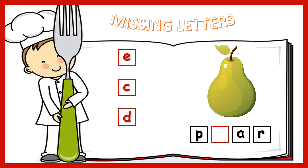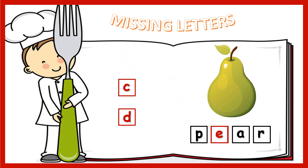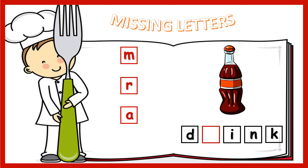It's a pear. Fill in the square, please. We have P, E, A, R. The missing letter is E. Good job! The next one is 'drink.' Which is the correct letter — M, R, or A? The correct answer is letter R. Well done!